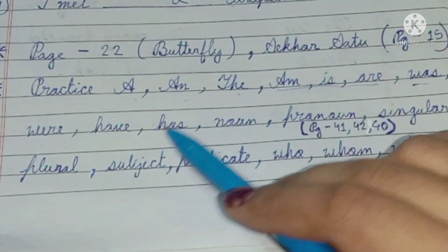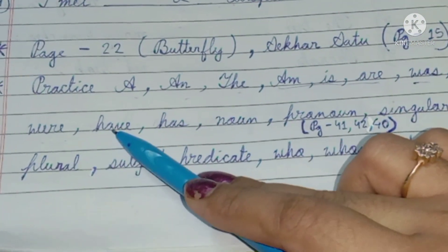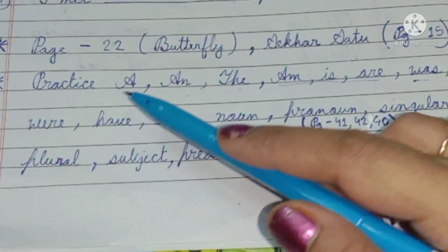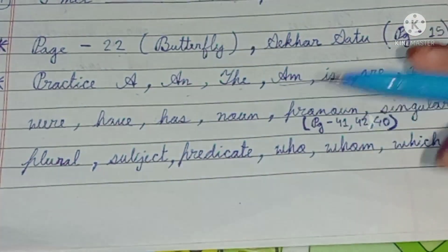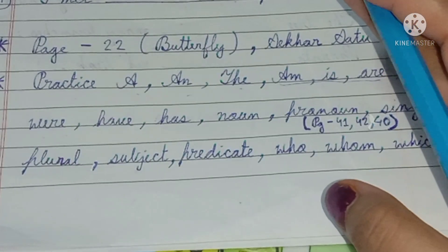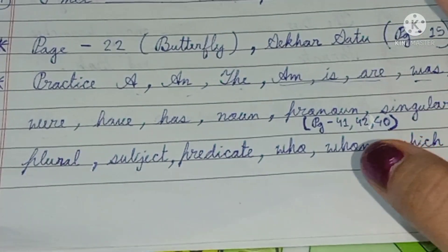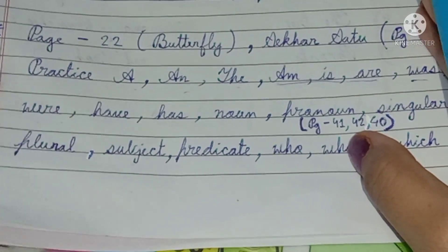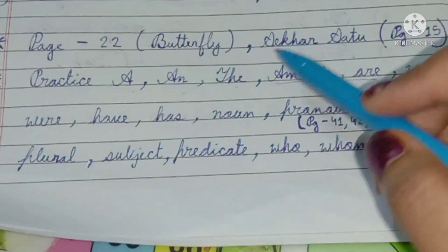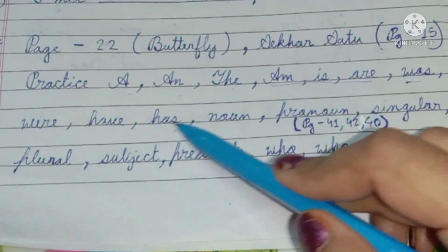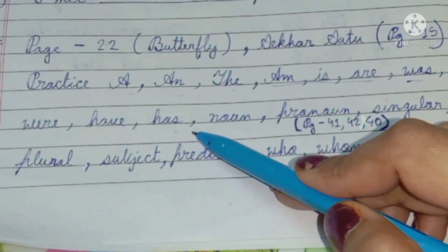So, 'was' — 'I was'. 'Were'. Next: 'have' and 'has' — very important. Have, has.